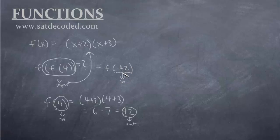So we're going to replace the 42, and we're going to put it where the x's are. So it becomes (42 + 2)(42 + 3). So that equals 44 × 45, and whip out your calculator, whatever that equals. I don't have a calculator with me right now, but whatever that number is, that is our final answer, and that is an output as well.